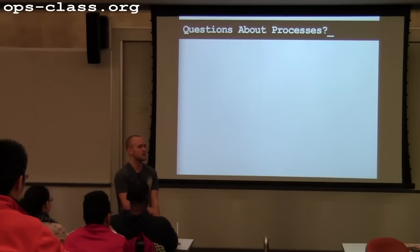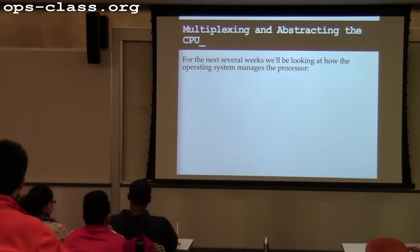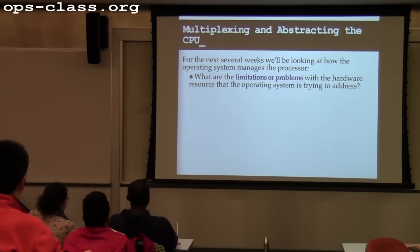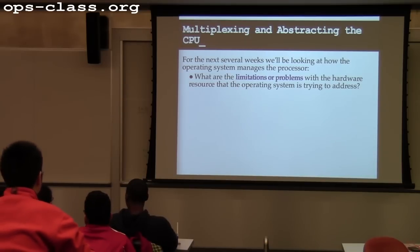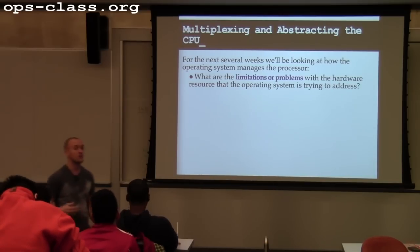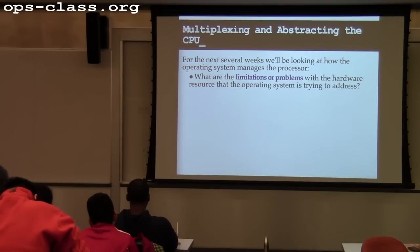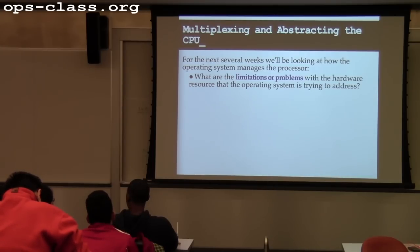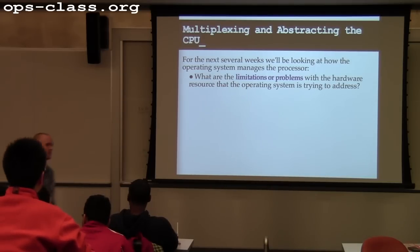Today we start looking at how the operating system manages the processor. Remember, the two goals of the operating system are to multiplex resources and provide useful abstractions. When thinking about the CPU, what are some limitations or problems that the OS might be trying to address? The number of cores on a system is usually much smaller than the number of processes running on it.